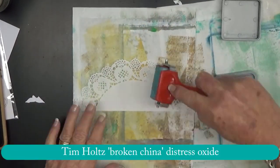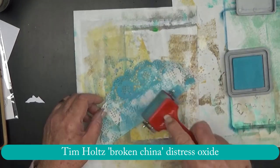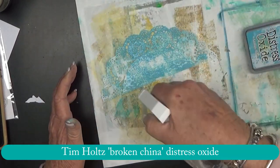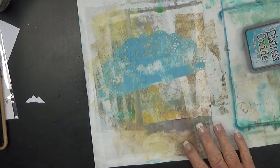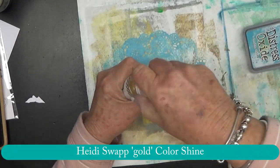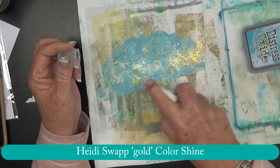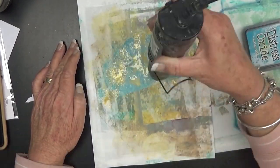Now for the larger one I'm using broken china distress oxide and I'm trying to give it a more modern look. I don't know how that worked but anyway some Heidi Swap gold color shine.